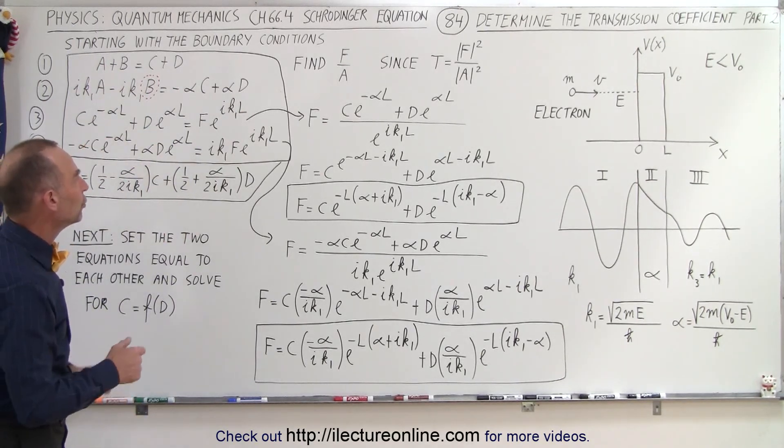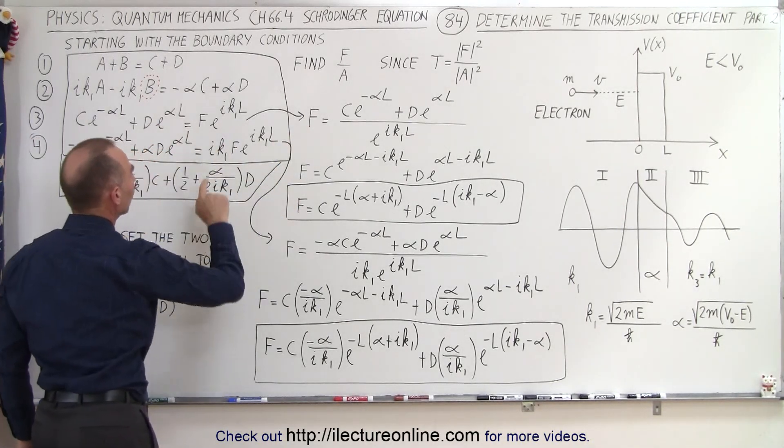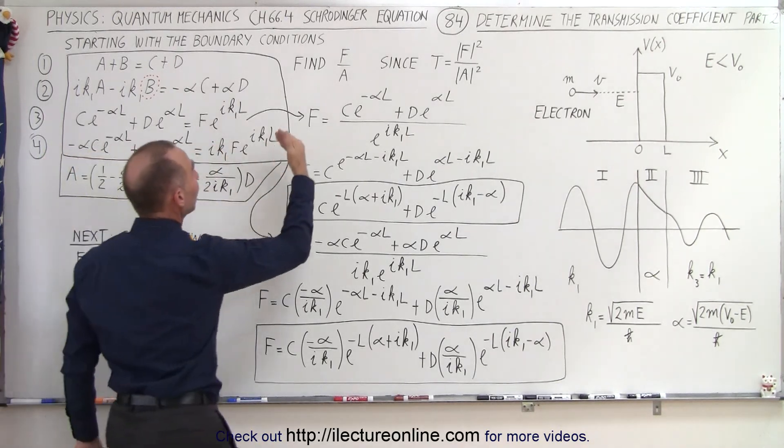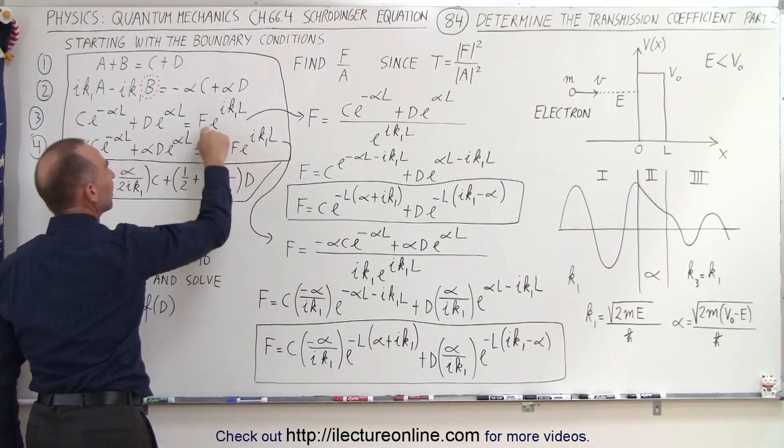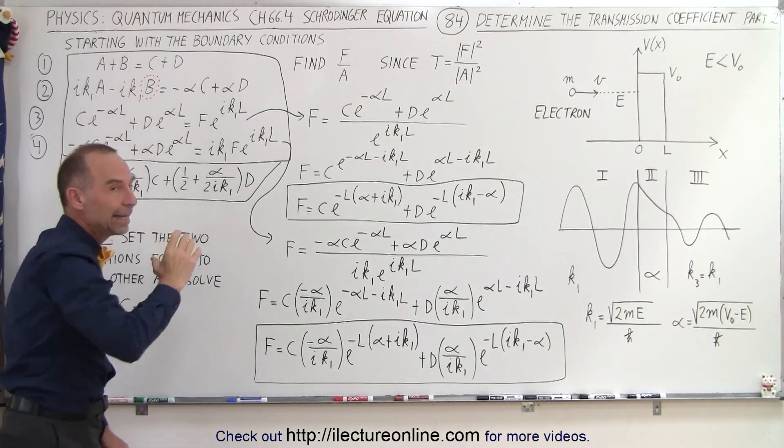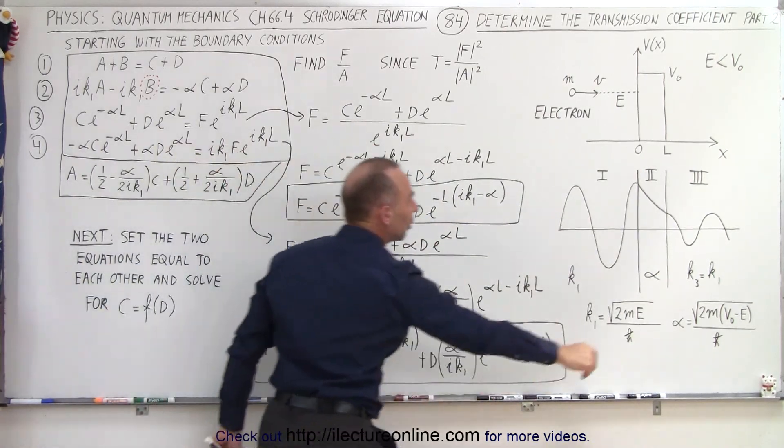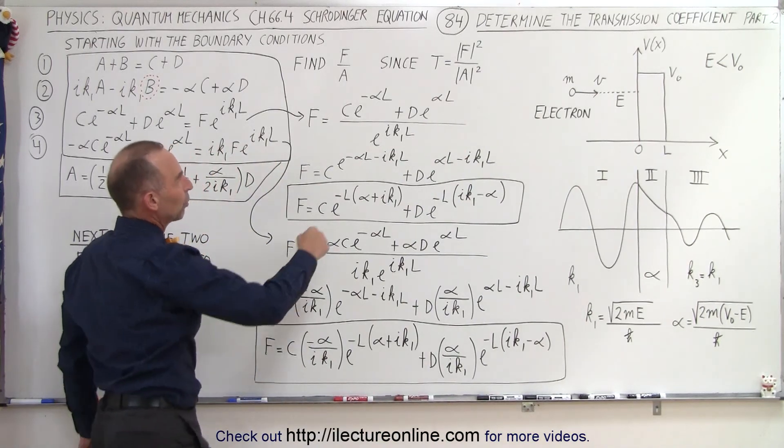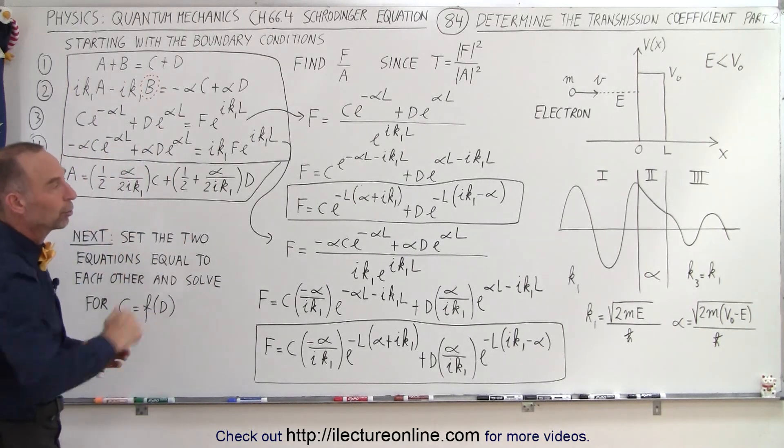The step that we're going to do now is take equation 3 and 4 and solve those for f. So we take the third equation here, and remember what we're trying to do here is find an expression where we have f divided by a. f is the constant that we find in these two equations here. a is the constant we find in here and in here. So a is the amplitude of the oscillations in region 1, and f is the amplitude of the oscillations in region 3, and the ratio of that squared is what we call the transmission coefficient, which is also the probability of the particle making it through the barrier.